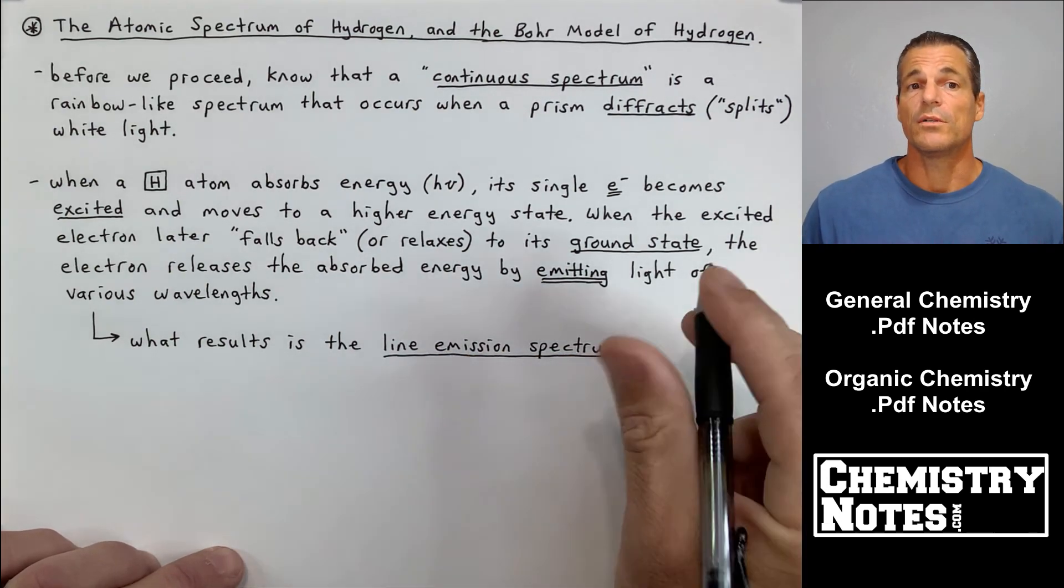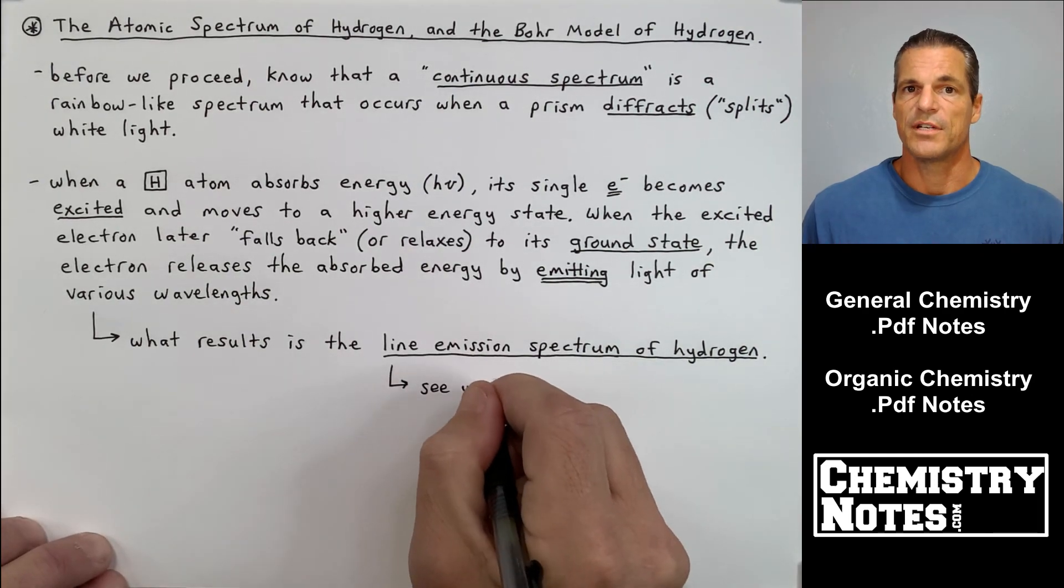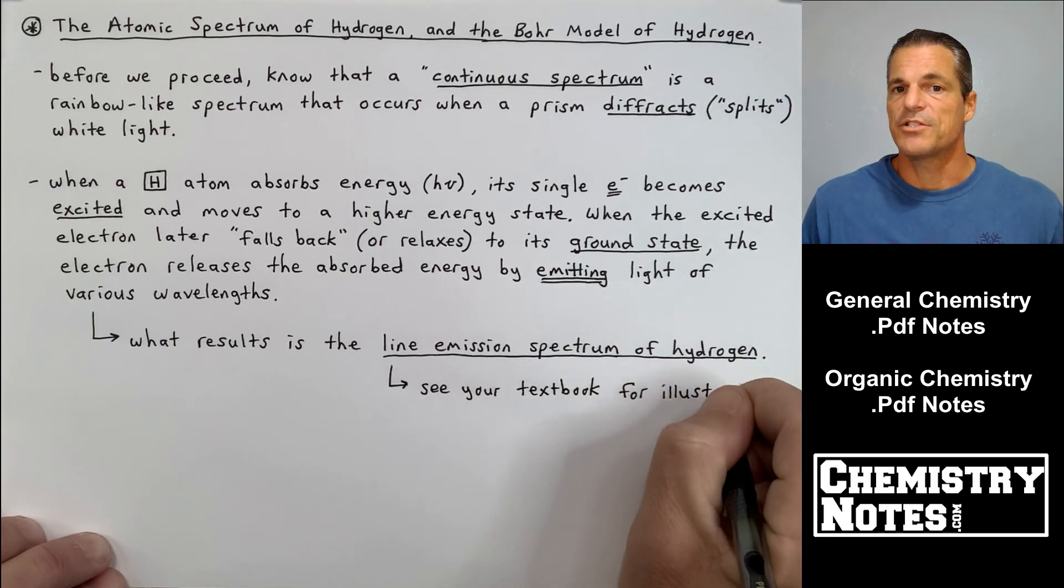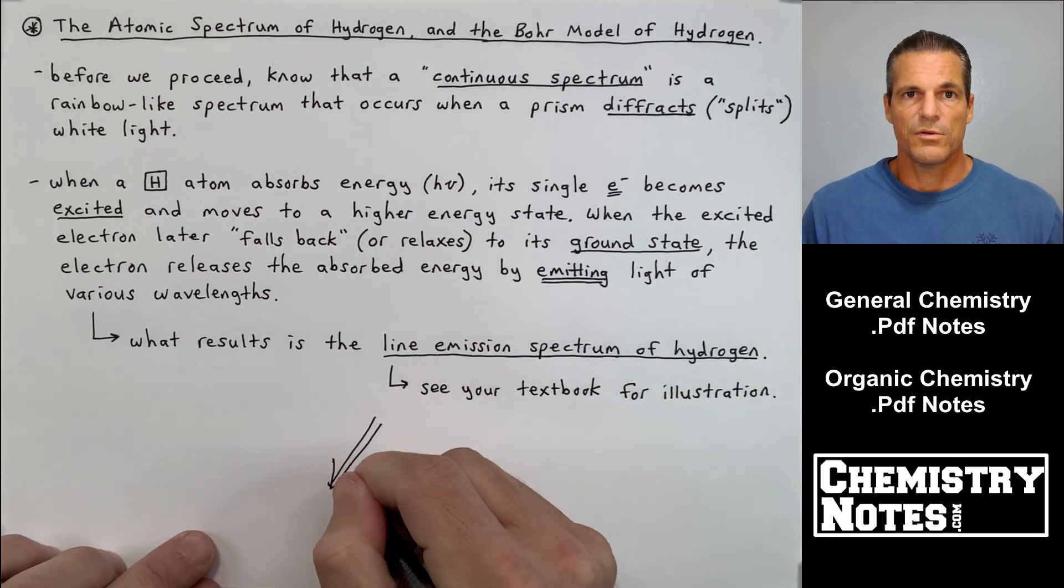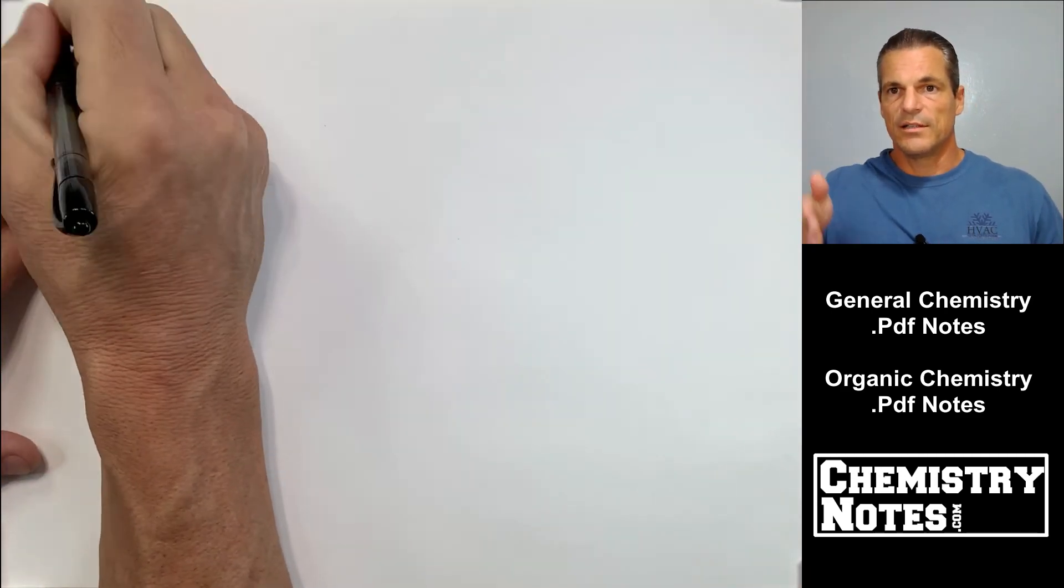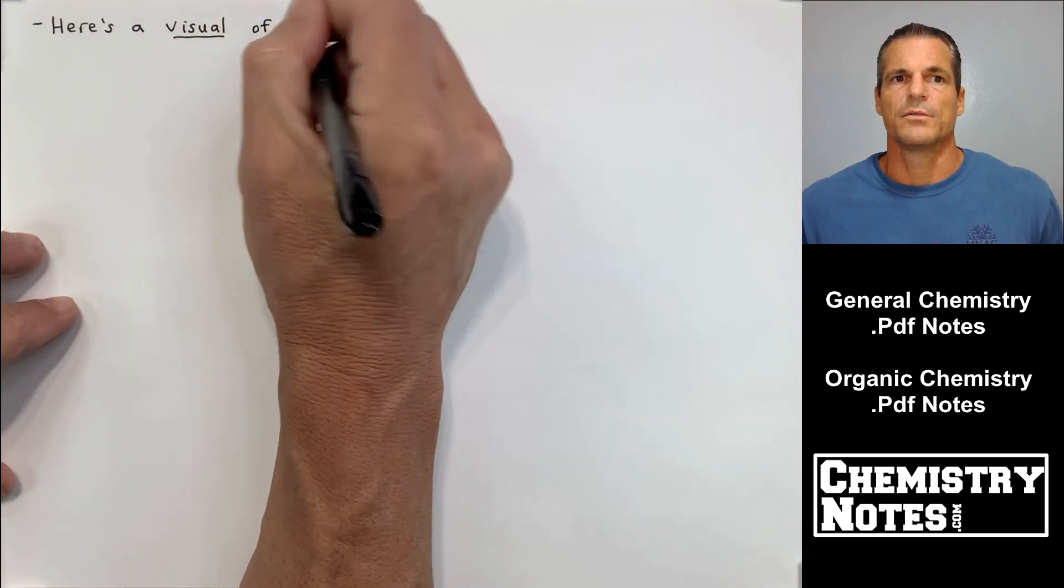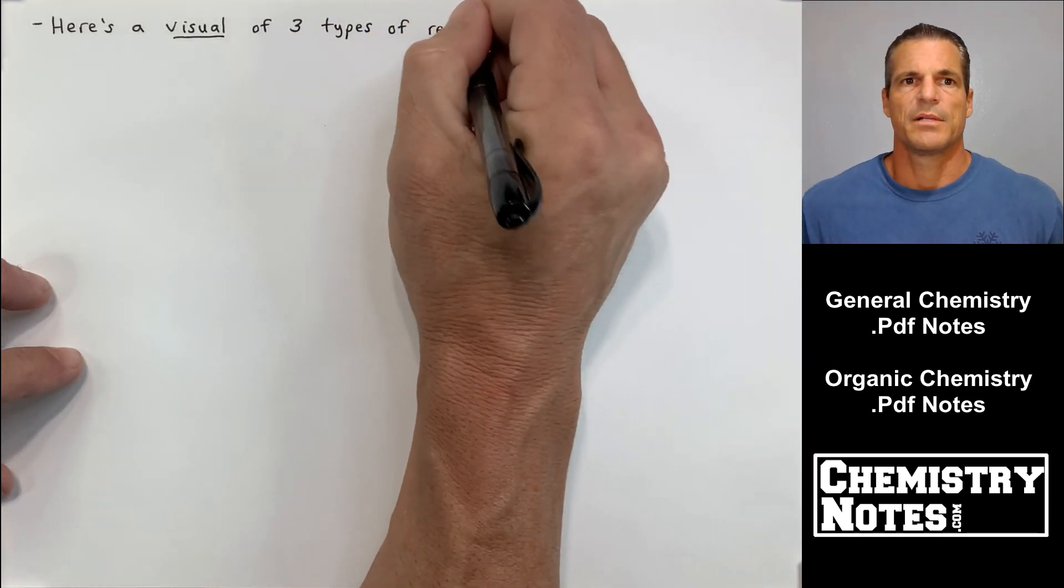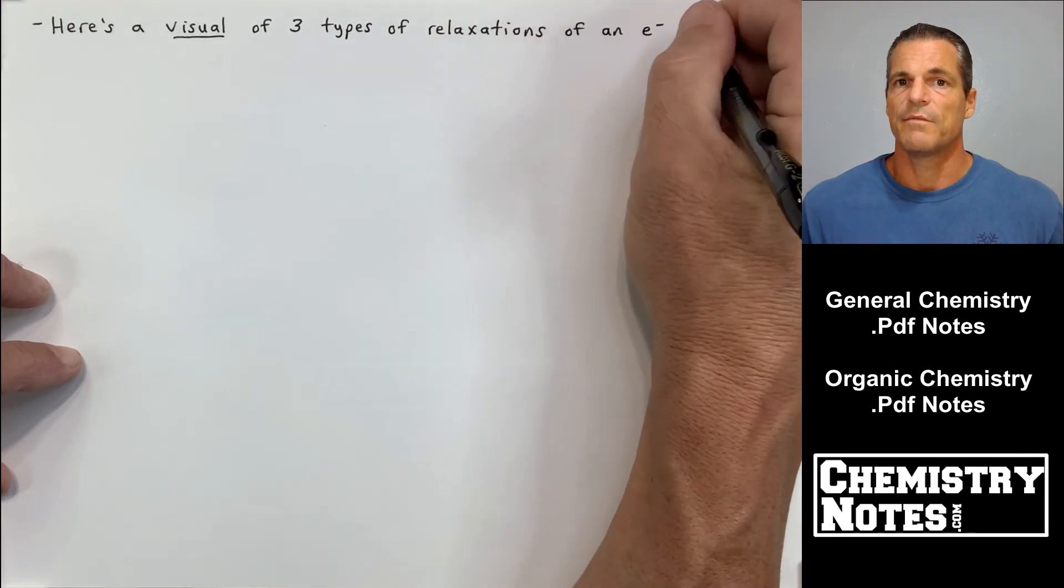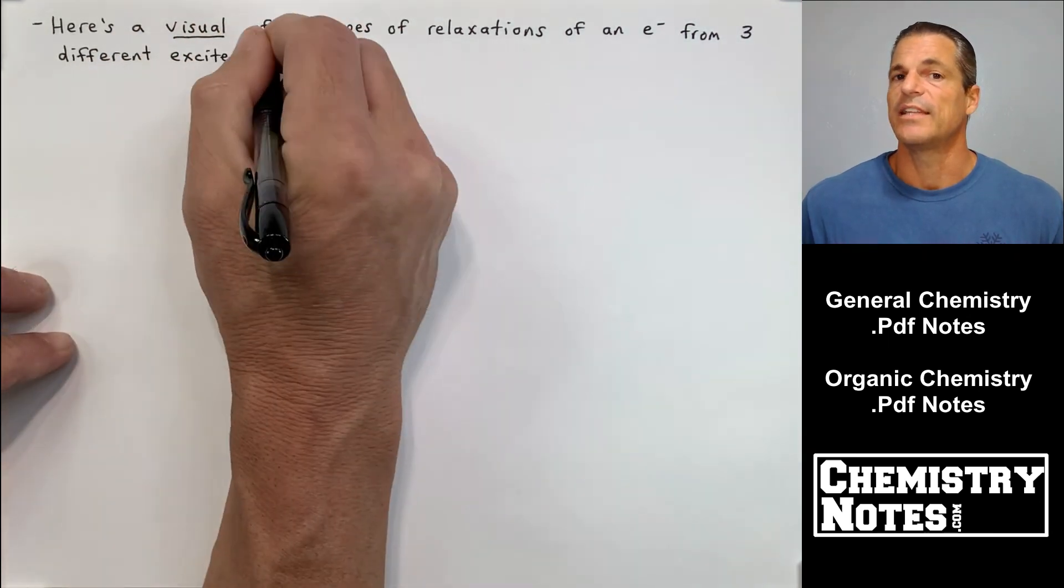What results when that happens is something called a line emission spectrum of hydrogen. It's not a continuous spectrum with all the colors, it's called a line emission spectrum. If you take a look at the textbook or on Google, hydrogen in particular has four little lines. Here's a visual of three types of relaxations of an electron from three different excited energy states or excited energy levels: n equals 3, n equals 4, n equals 5.